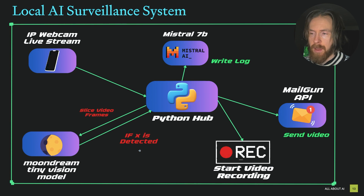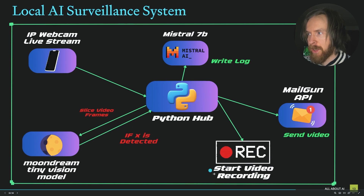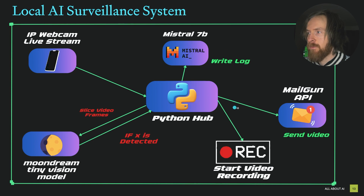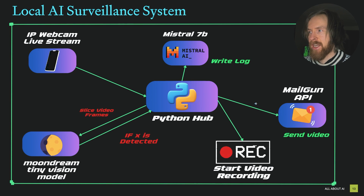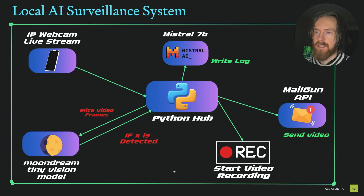We feed the frames into the MoonDream tiny vision model. If X is detected - in the intro it was a person, but we can do it like a fire or boiling water. If that happens, we start the video recording. On top of that, we can have Mistral 7B look at the output from MoonDream and write a log. We can use the Mailgun API to send video clips to our email address. If you want to be 100% local, you can drop the API and just save the videos to a folder.